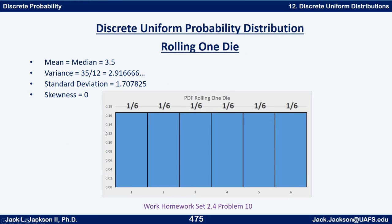An example of this is rolling a single die, where the x values are 1, 2, 3, 4, 5, or 6 and the probabilities of all of them are 1/6. So the PDF function is just 1/6 for the probability value, and the bars are all the same height — 1/6.